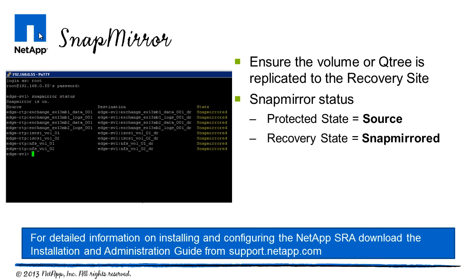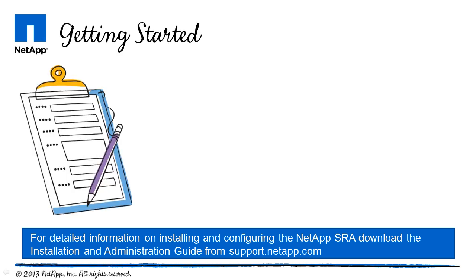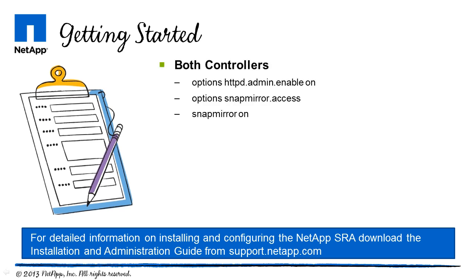Be sure to read the SRA 2.1 installation and administration guide for detailed information on creating and managing SnapMirror relationships. A few things to check before we install the SRA: on both controllers, run the following commands. Options httpd.admin.enable on — this is used to enable API access for SRA and other plugins.